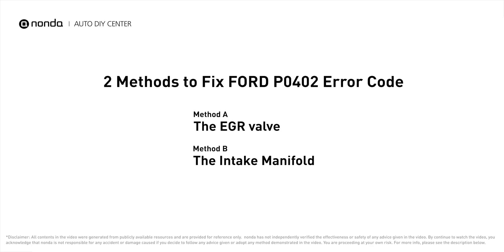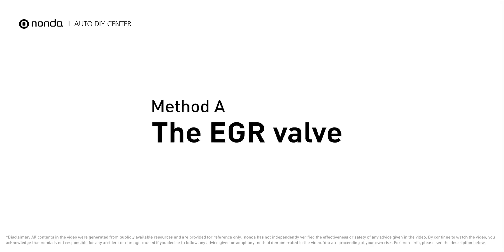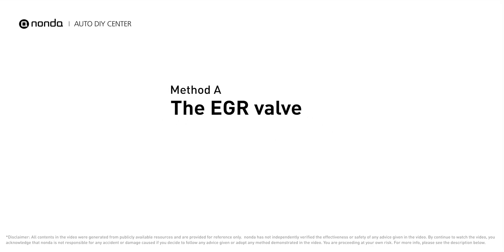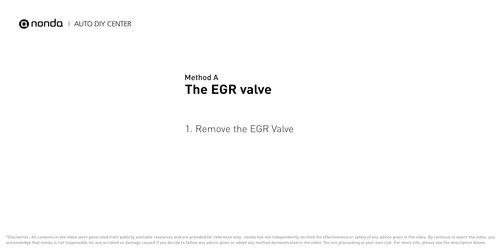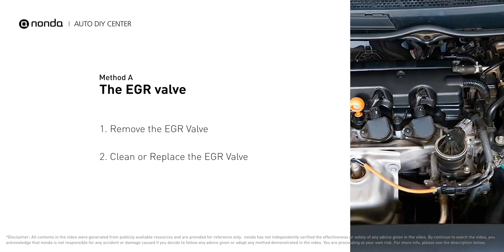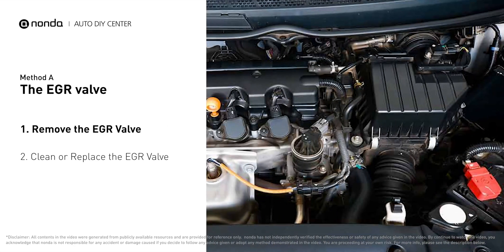Here are two of the most practical solutions to fix Ford's P0402 error code. Method A: the EGR valve. Looking at the engine from the front, the EGR valve is located towards the rear of the engine, just to the right side of the center.